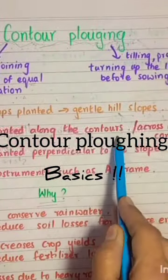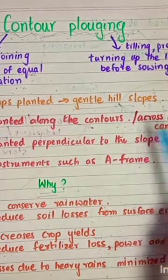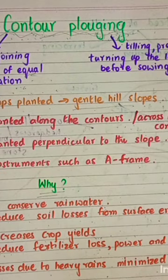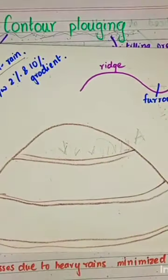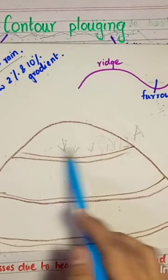In this practice, the crops are planted along the contours. To understand this better, let us look at this diagram. Here, supposing if this is the hill slope, so the crops are planted along the contours and this is the contour line which is marked.